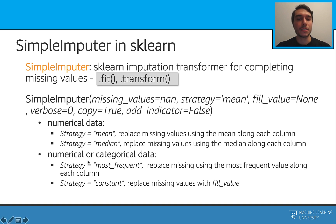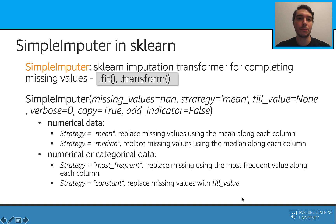For numerical or categorical data, we can choose the strategy most_frequent. In this case, it is going to use the most frequent value. Or we can use the strategy called constant — in this case, we choose which value to use, and we fill in this parameter with a number. And this is how we use scikit-learn to impute our missing values.